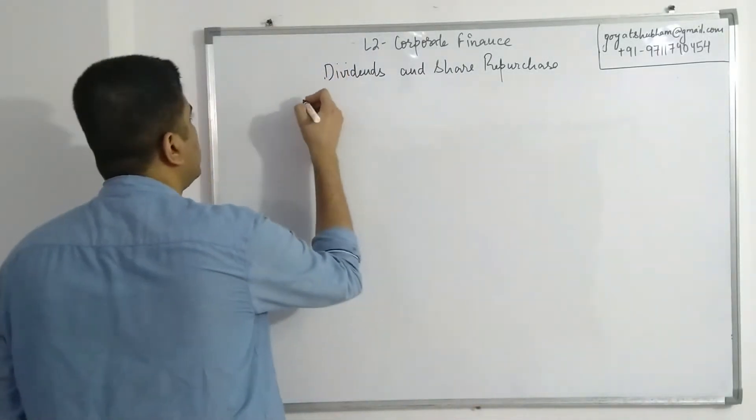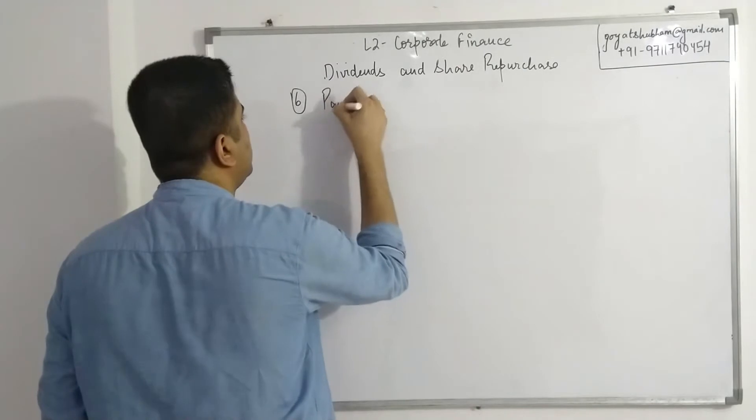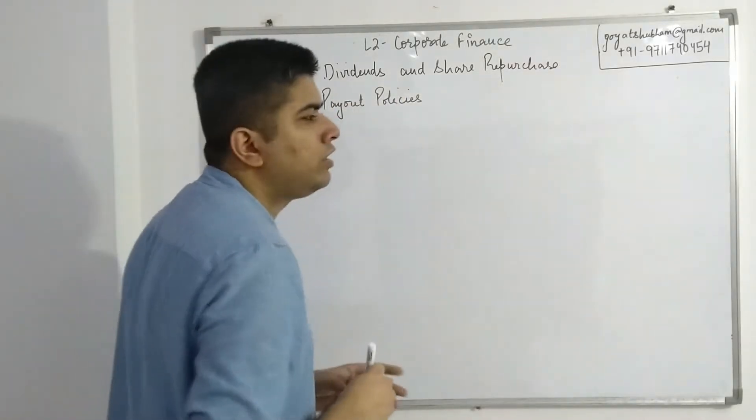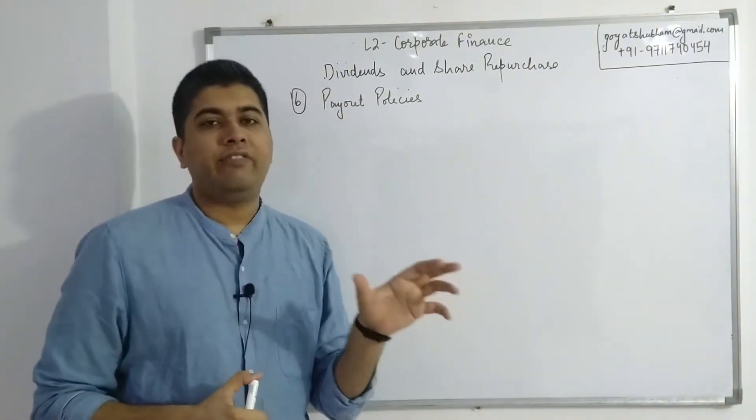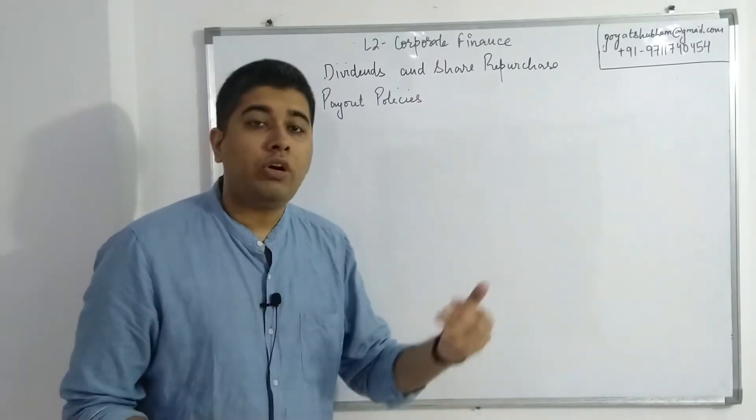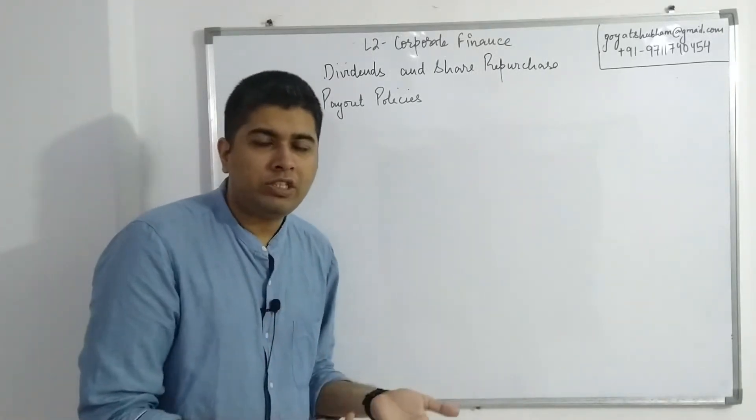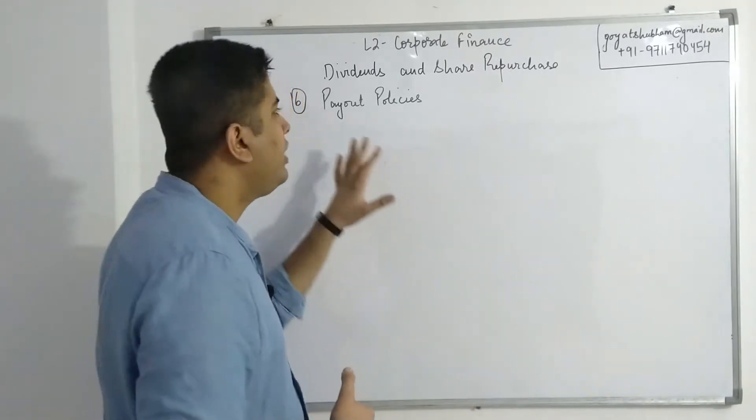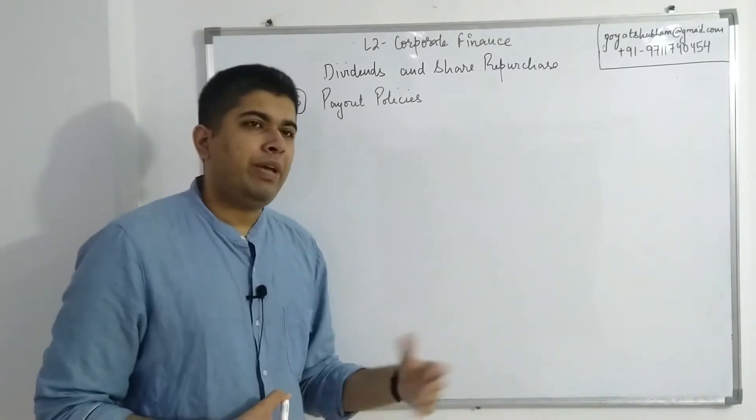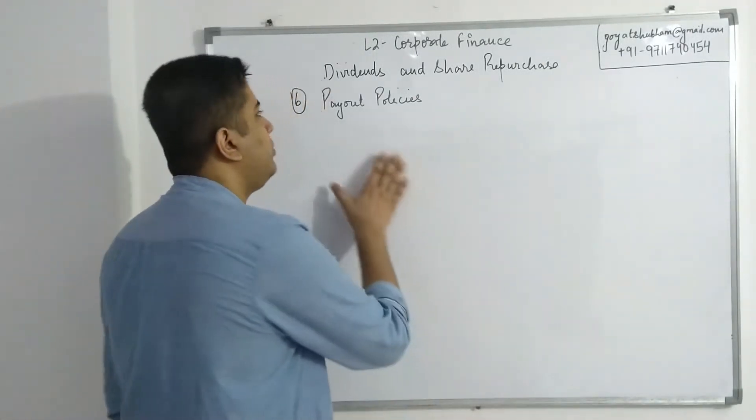So let's start with the first topic which is payout policies. Now in the previous session towards the end we covered the various market signals that dividends can send. And because the company also knows that a lot of people are reading into how much dividend has been declared, they try to keep a very fixed payout policy. They try to create a strategy according to which dividends will be paid out, and those are the strategies we'll be covering here.